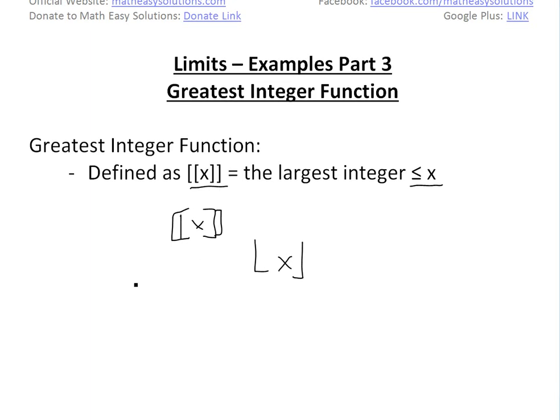And basically defined as this is equal to the largest integer that's less than or equal to x. So what I mean by that, if you had the greatest integer of 4, the largest integer, you can see my other video on what integers are, just basically 0, 1, 2, 3, 4, 5, etc. Just whole numbers, could be negative as well. This one here, the largest integer less than or equal to x is just going to be 4. 4 is equal to 4.